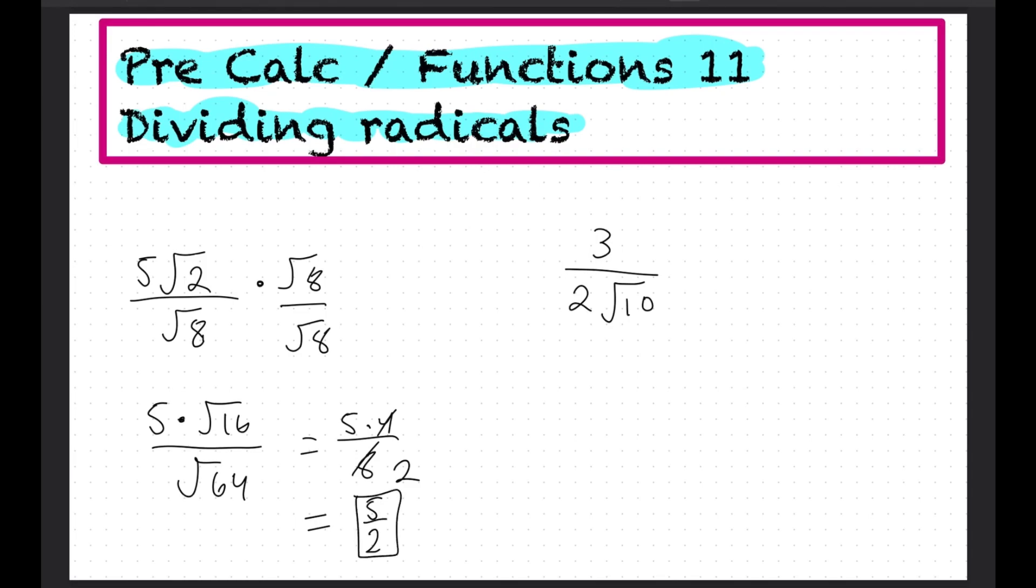Okay, try this one. Just like before, we would multiply by root 10, root 10, to get rid of the radical on the bottom. And when we do that, we will get 3 root 10 over 2 root 100, and that's the same thing as 3 root 10 over 2 times 10, which will be just 20. So I'll just put it here. And that's our answer.